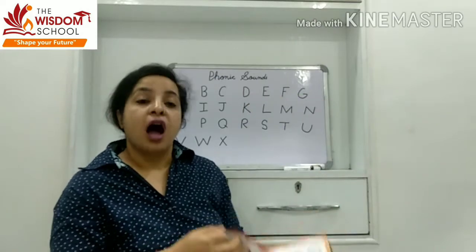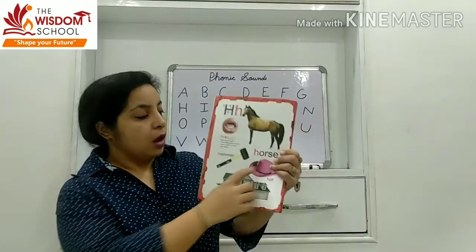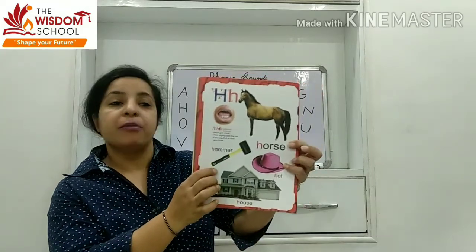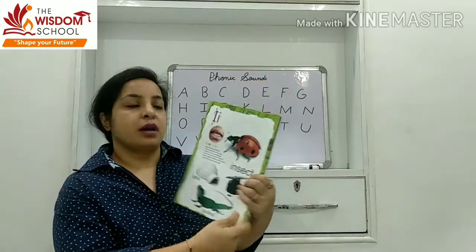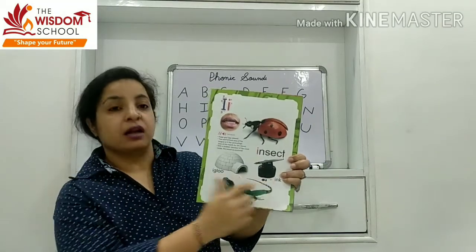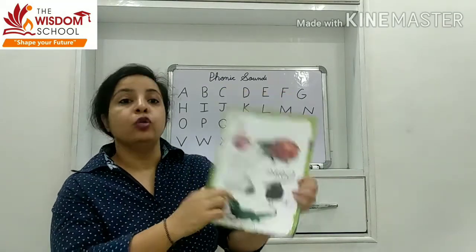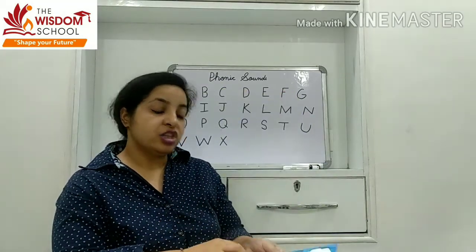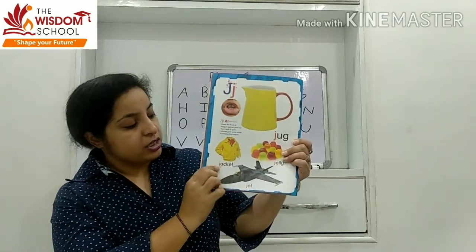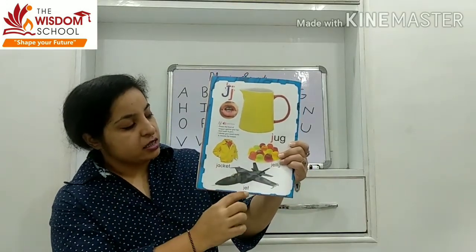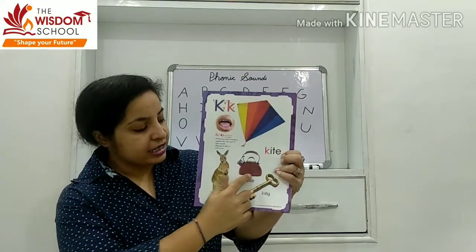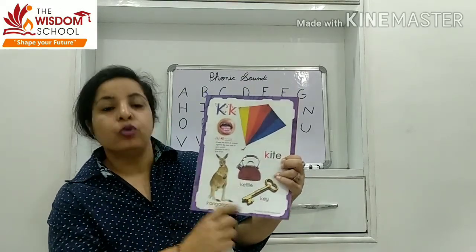H — horse, hat, house, hammer. I — insect, ink, igloo. J — letter J sound — jerk, jelly, jacket, jet. K — kite, cattle, kangaroo, key.